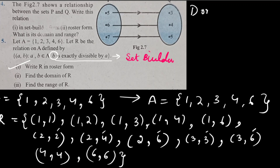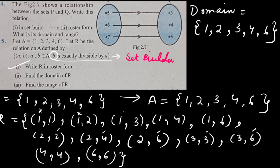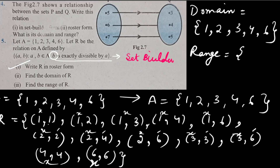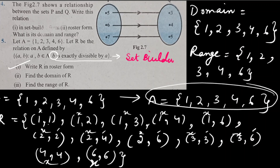Domain (values of x or a): {1, 2, 3, 4, 6}. Range (values of y or b): {1, 2, 3, 4, 6}. Co-domain is also set A = {1, 2, 3, 4, 6}. In this question domain, range, and co-domain are all the same. Let's move to the next question.